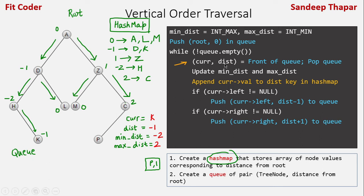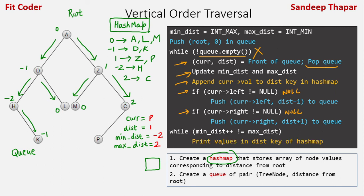In the next iteration, current is P with distance 1. We pop and the queue becomes empty. Distances are unchanged. We append P to key 1, which already has Z. Left and right of P are both null. The while loop terminates. Now we print the values in the hash map starting from the minimum distance key, minus 2: minus 2 maps to H, minus 1 maps to D and K, 0 maps to A, L, and M, 1 maps to Z and P, and 2 maps to C. This is our vertical order traversal.